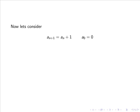Consider the formula aₙ₊₁ = aₙ + 1 with the condition a₀ = 0. We can find a₁: a₀₊₁ = a₀ + 1, so a₁ = 0 + 1 = 1. Whereas a₂ = a₁ + 1 = 1 + 1 = 2. Now if we wanted to find a₃, we would use the value of a₂, and so forth.